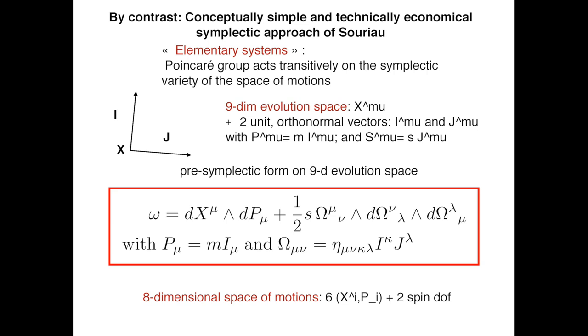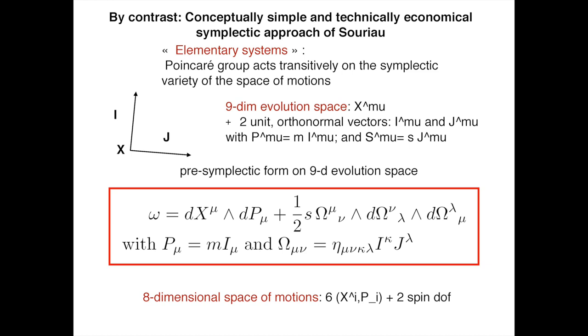By contrast, as you all know, I want to emphasize again that the symplectic approach of Jean-Marie Souriau is both conceptually simple and technically economical. It is based on two ideas: the idea of elementary systems — which has changed meaning somewhat over Souriau's works — but in this case it means that the Poincaré group acts transitively on the symplectic variety of the space of motions.